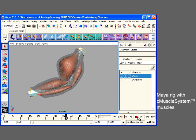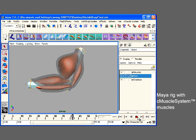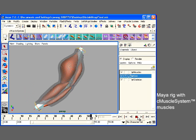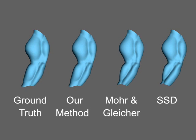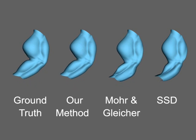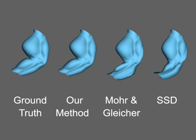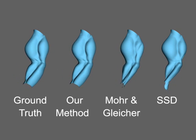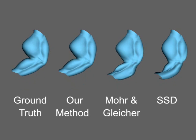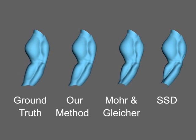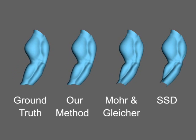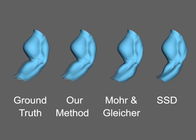For instance, consider an anatomically inspired arm rig in which the elbow both bends and twists. We compare our technique with that of Mohr and Gleischer and SSD. The twisting motion is enough to impair the SSD prediction. Mohr and Gleischer's technique does better, but there are still differences. Our result is almost indistinguishable from the ground truth.